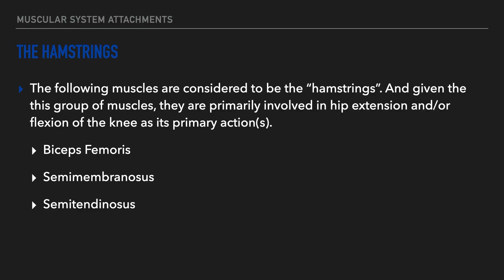Next up, we'll investigate a group of muscles referred to as the hamstrings. Given the location of this group of muscles, we get an idea of their primary action, which is to extend the hip and flex the knee. These muscles include the biceps femoris, semimembranosus, and the semitendinosus.